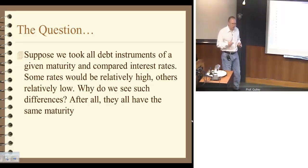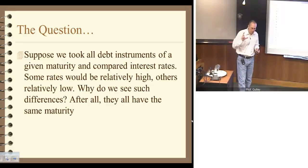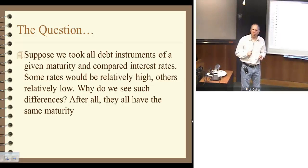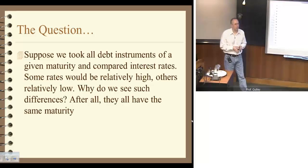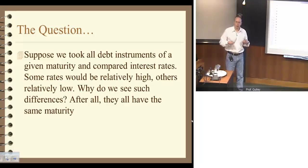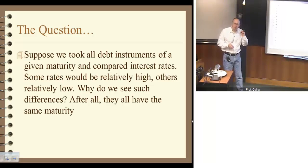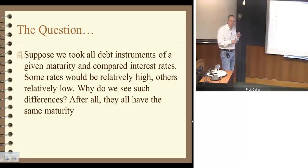Here's a question we want to ask. Suppose that we have a bunch of debt instruments — bonds or other similar — and we freeze or fix the time of maturity at, say, 10 years. If we take all bonds that have a maturity of 10 years, what we'll observe is that there are lots of different interest rates on those 10-year bonds. Some will have relatively low interest rates, some relatively high. Why do they have varying interest rates, even though they all have exactly the same maturity? That's the question we want to answer here.